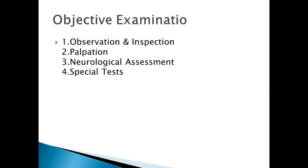Now let's talk about objective examination. There are four components of objective examination: number one, observation and inspection; number two, palpation; number three, neurological assessment; and number four, special tests. Let's break down and study each one by one.